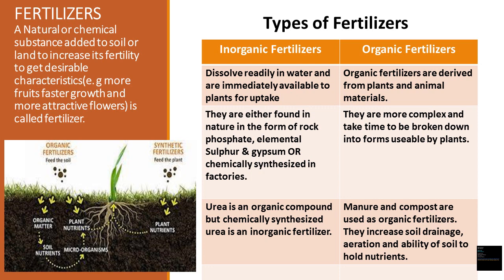A fertilizer is a natural or chemical substance added to soil or land to increase its fertility and to get desirable characteristics like more fruits, faster growth, and more attractive flowers. These fertilizers contain the essential nutrients required for plant growth. Fertilizers are of two types: inorganic fertilizers and organic fertilizers. Inorganic fertilizers readily dissolve in water and are immediately available for plant uptake. Organic fertilizers are derived from plant and animal material, are more complex, and take time to be broken down into usable form.